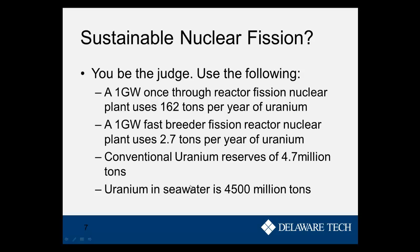For your discussion board — it's probably going to be your hardest discussion board — you're going to have to consider the two facts I give on these next two slides. There's something called a once-through fission reactor, and that uses 162 tons per year of uranium for a one gigawatt plant. And the fast breeder fusion reactor uses only 2.7 tons of uranium for a one gigawatt plant. We're going to estimate that the conventional uranium reserves are 4.7 million tons. But if we were able to extract uranium from seawater, we could get 4,500 million tons.